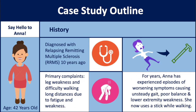Anna, a 42-year-old, was diagnosed 10 years ago with MS. Her primary complaints were leg weakness and difficulty walking long distances due to fatigue and weakness. For years, Anna has experienced episodes of worsening symptoms, causing unsteady gait, poor balance, and lower extremity weakness.